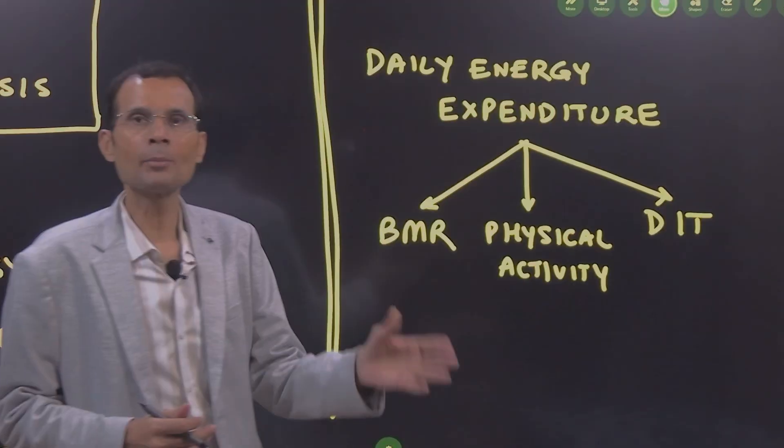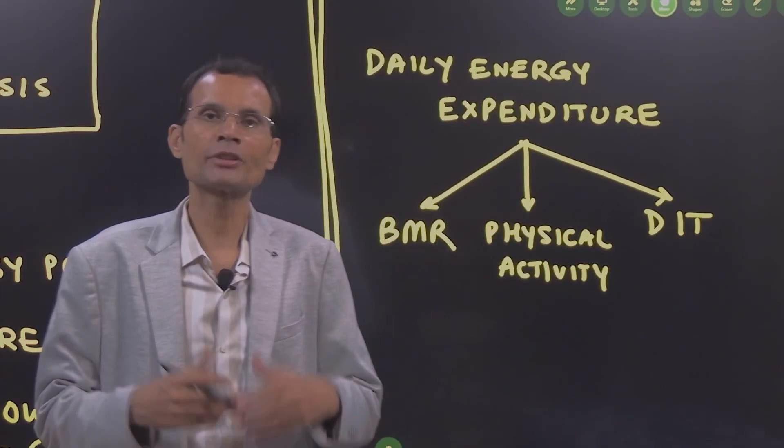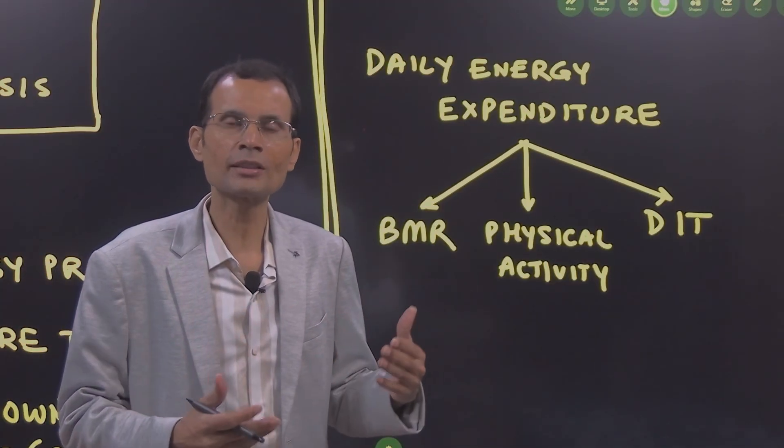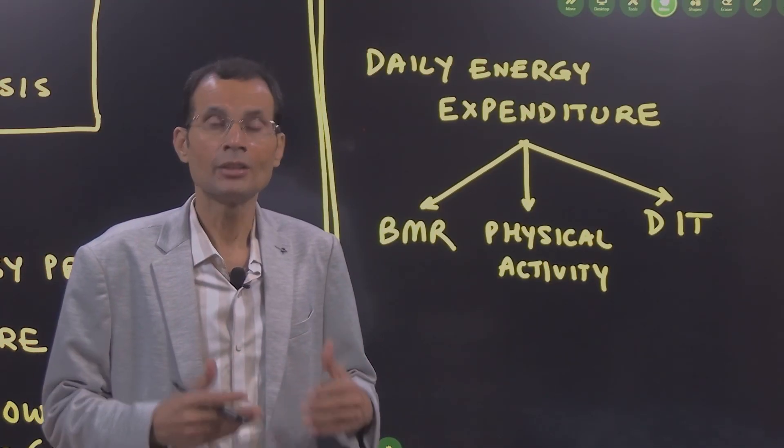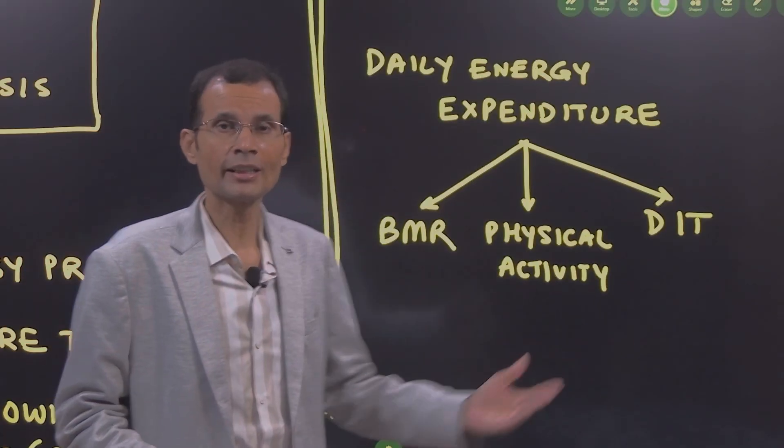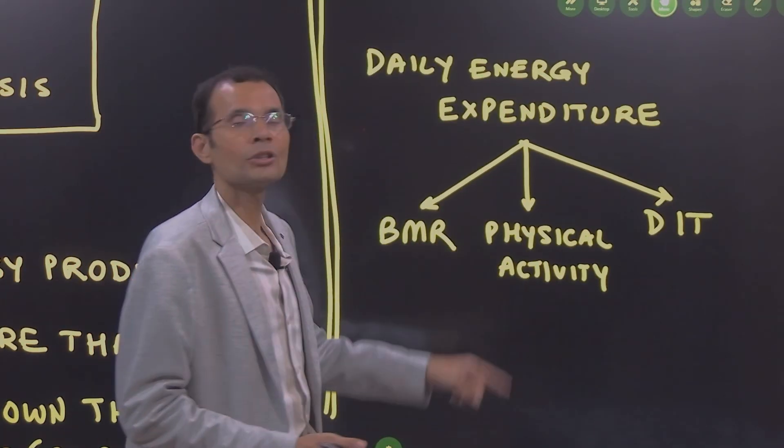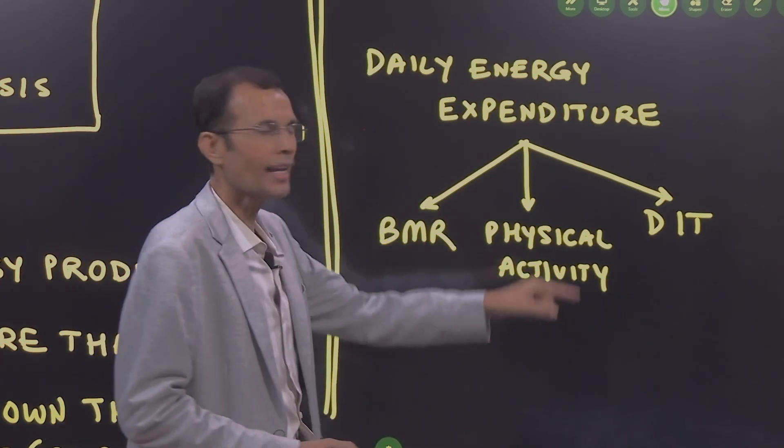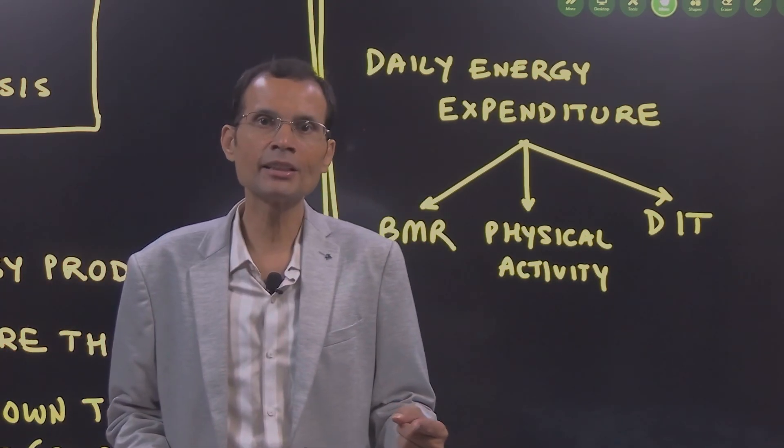The BMR, the basal metabolic rate. Cells are under basal conditions, they are constantly in this energy turnover process and that breaks down the ATP and generates heat. You know there are hormones that increase the BMR. Therefore, they generate heat in the body. Physical activity also generates heat in the body.